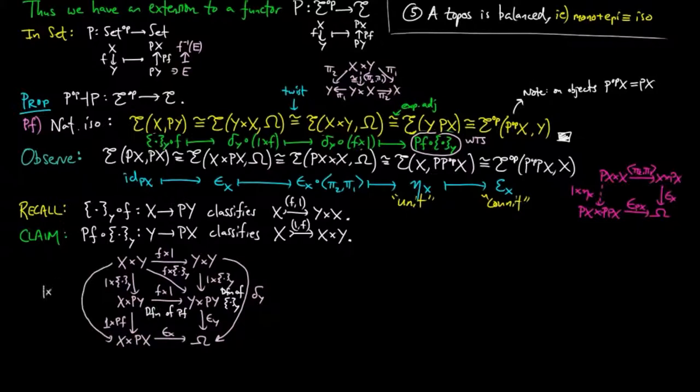Therefore, P(f) composed with the singleton morphism on y is the exponential adjoint to delta sub-y composed with f cross 1, showing that P(f) composed with singleton morphism on y classifies 1f, which is sometimes called the graph of f, as a sub-object of x cross y.